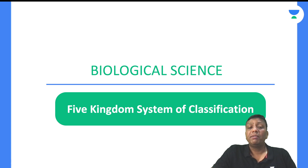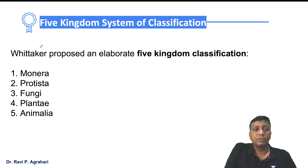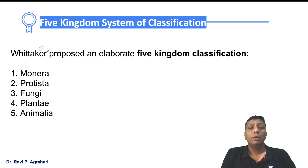So what is the five kingdom system of classification? How does it help us understand all organisms? You can see on the screen: the five kingdoms are Monera, Protista, Fungi, Plantae, and Animalia. Whittaker proposed classifying all living beings — plants, animals, and microorganisms — into these five kingdoms.